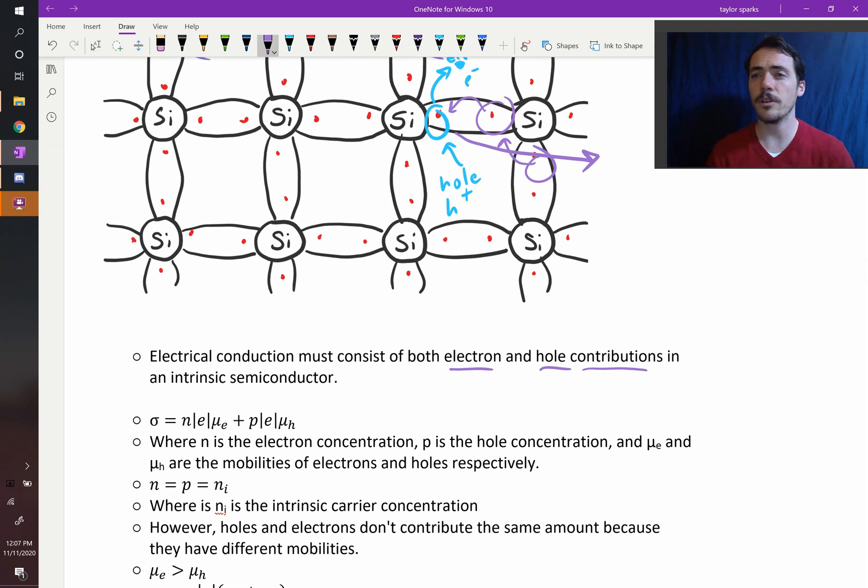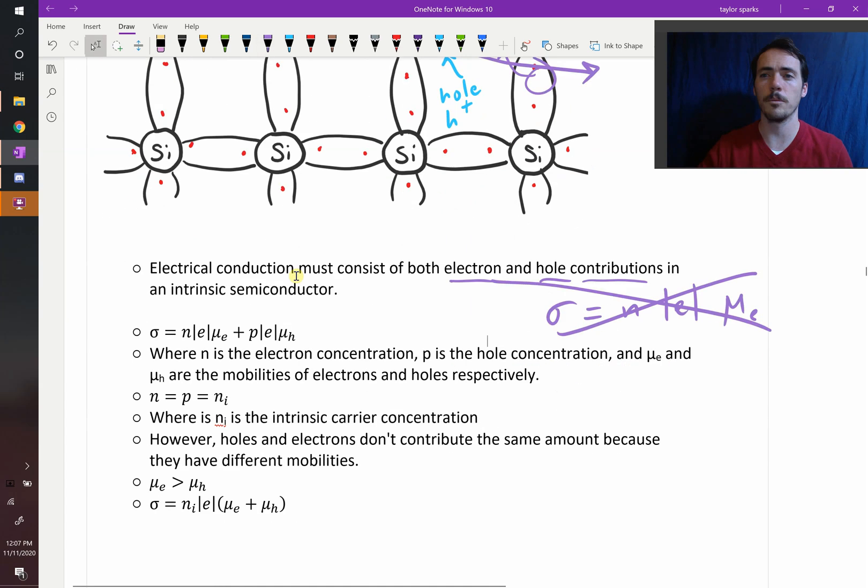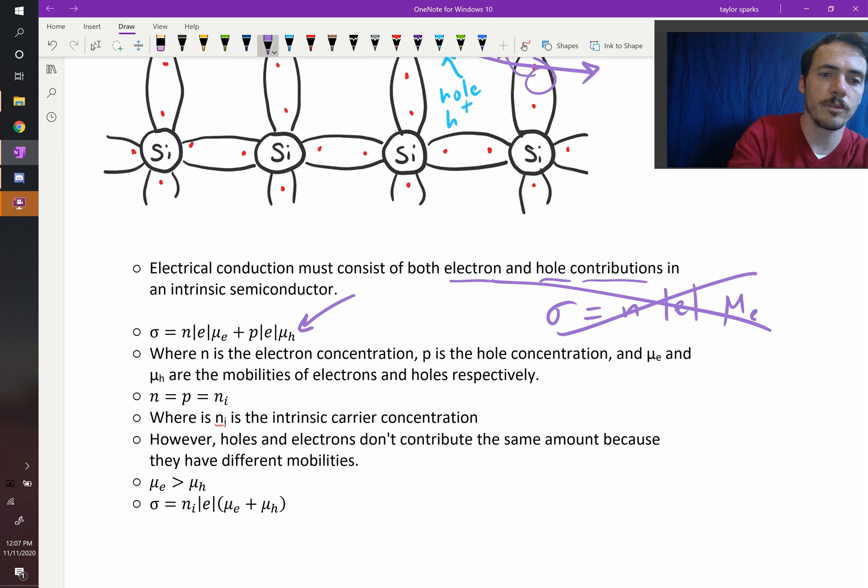So if we're going to calculate our electrical conductivity, remember for a metal, what did we have? For a metal, we said that the conductivity is equal to our number of our carriers times the charge of an electron times the mobility of our electrons. Here, we have to modify that because it's not a metal anymore. It's a semiconductor, and we have to account for both electrons and holes.